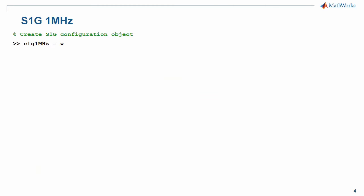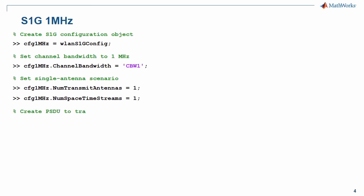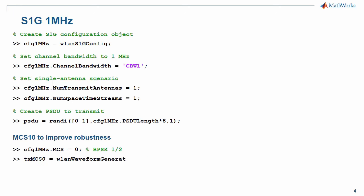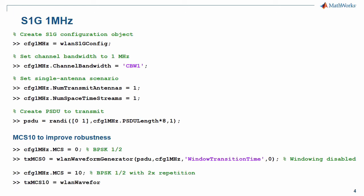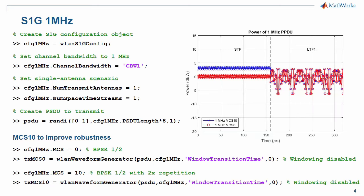The S1G 1 MHz mode is easily set up by specifying the channel bandwidth to be equal to CBW1. For this example, we consider a scenario with a single antenna and the PSDU to transmit is a random sequence of bits. The S1G 1 MHz mode includes a new modulation encoding system, MCS10, to improve robustness and to extend its transmission range. MCS10 is based on a BPSK modulation with half coding rate as MCS0 but with a 2x repetition after encoding. When MCS10 is considered, the short training field STF is boosted by 3 dB to allow for improved packet detection.